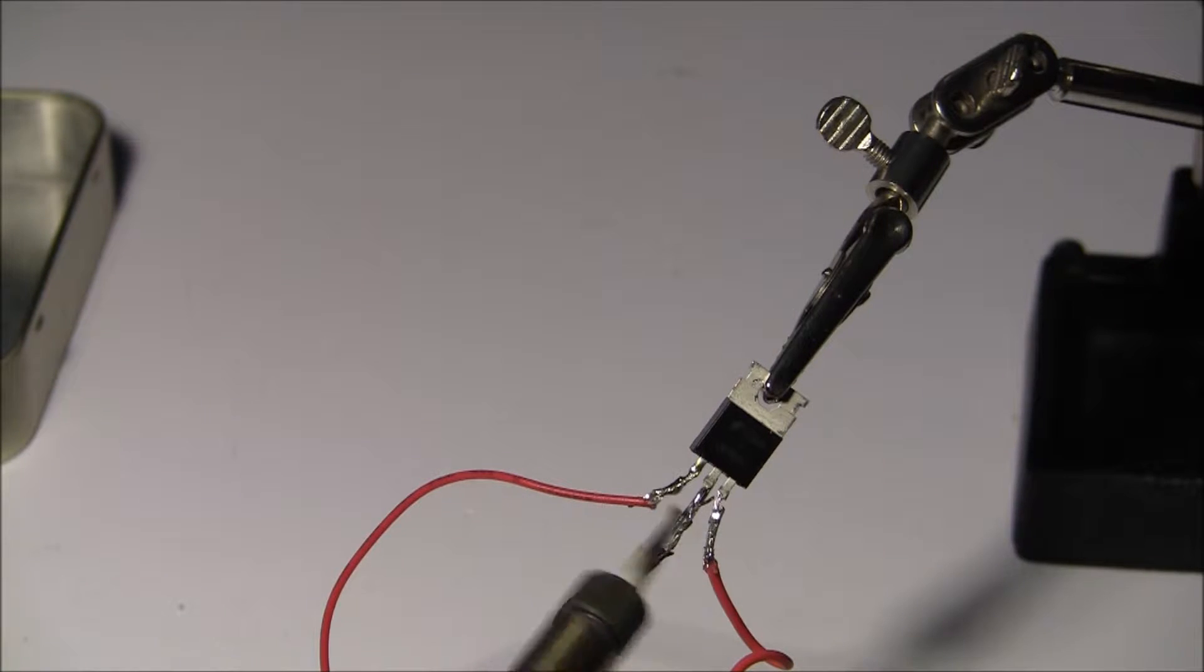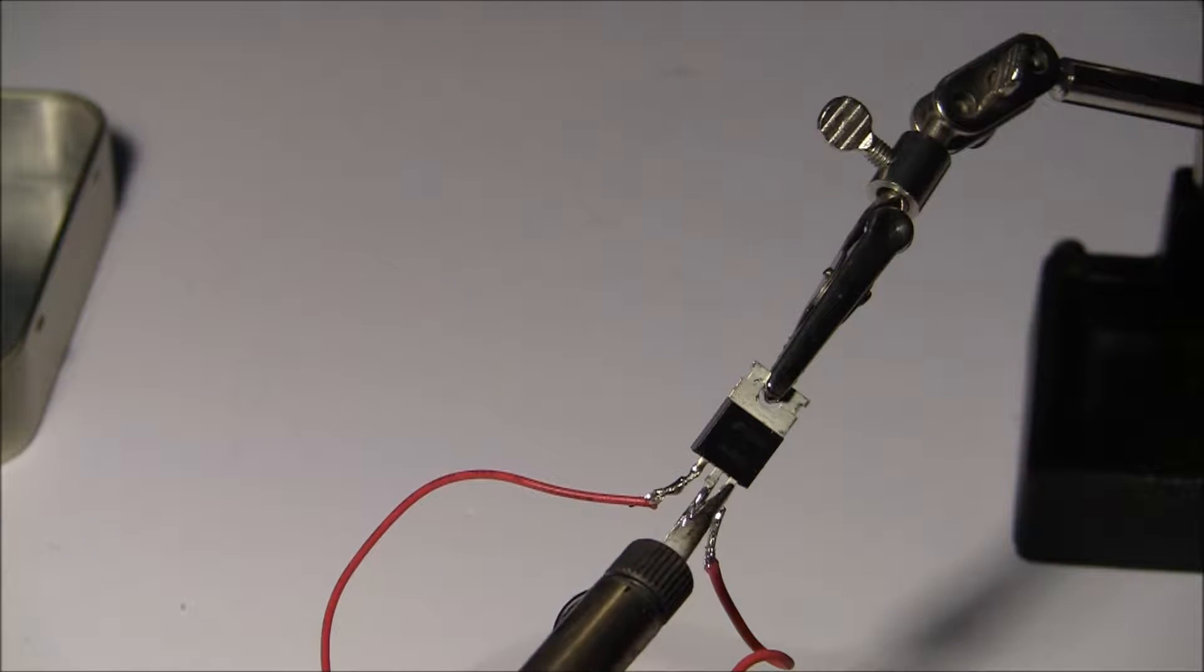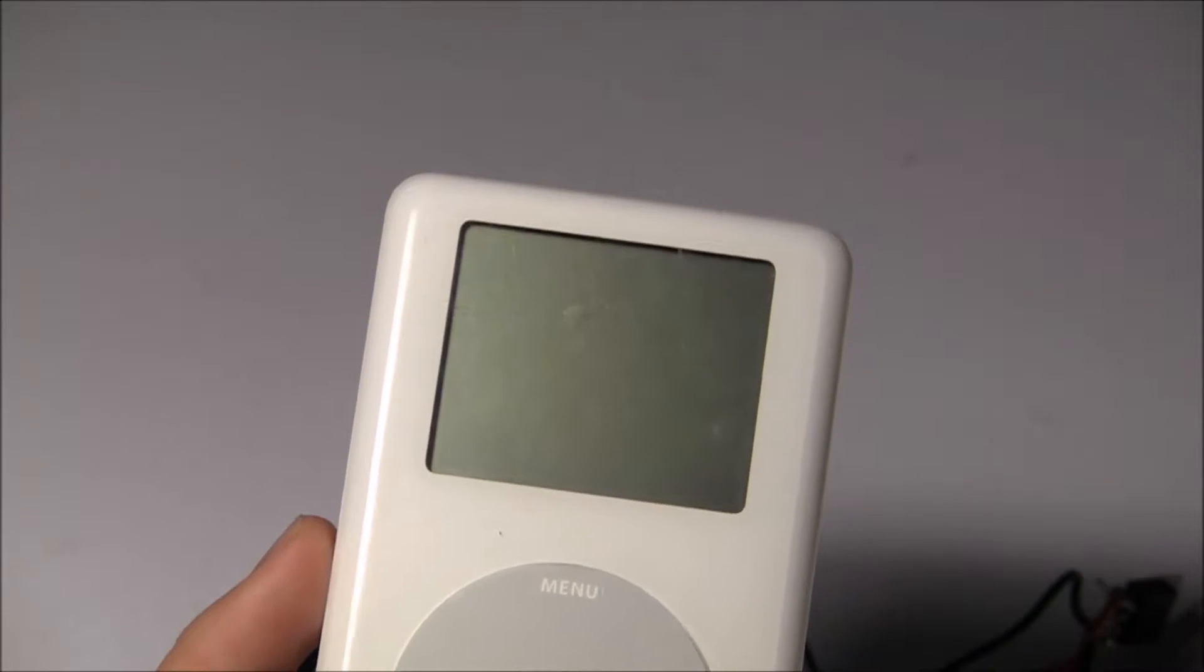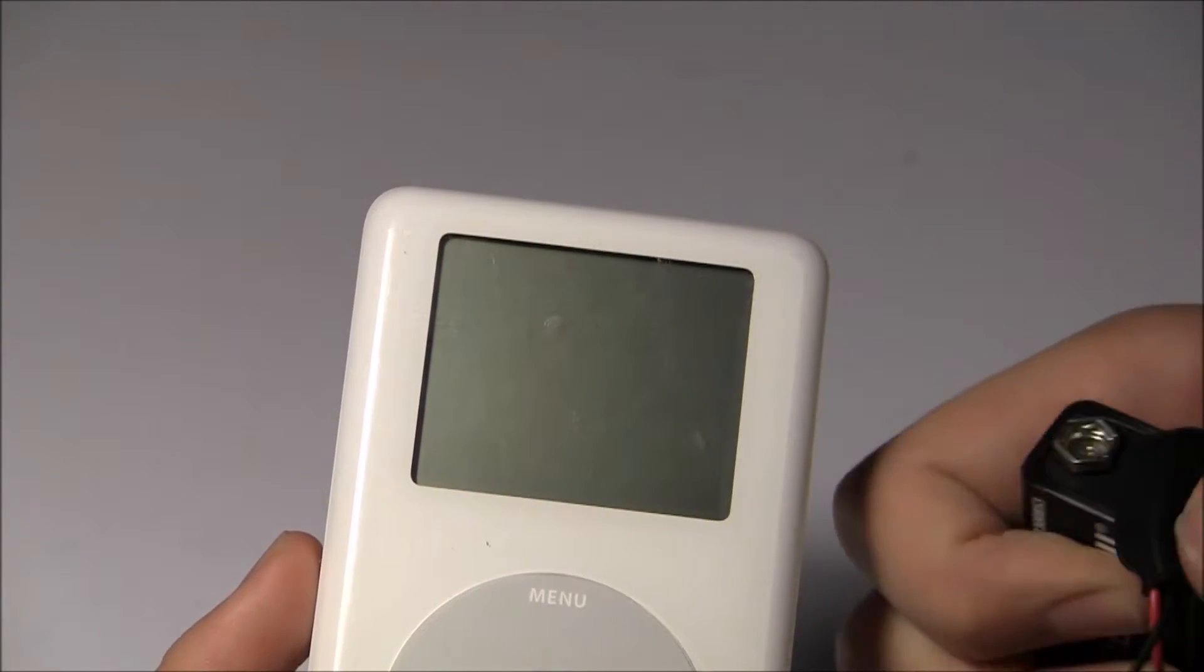On the battery clip, solder the red wire to the left and the black wire to the middle. Now you can test it out by connecting a phone or an iPod and turning it on.